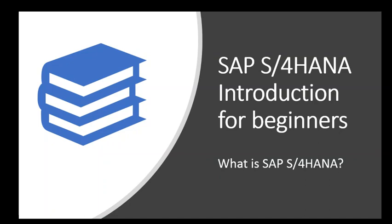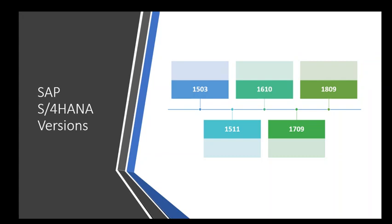The older version of SAP's ERP application was called SAP R3 ECC. That older version had a different set of technologies, and with SAP S4 HANA they came out with a newer set of technologies. We will learn about what SAP S4 HANA is, how it is better, and why you would or would not need it.